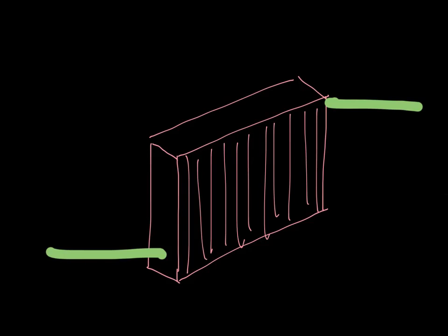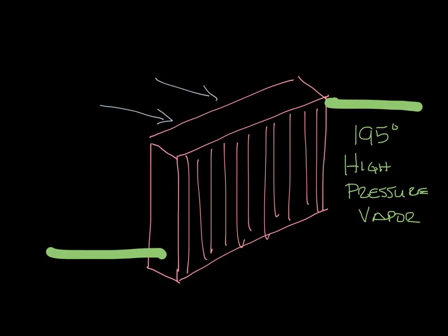So coming into the condenser, you have 195 degree high pressure refrigerant vapor. Air passes through the fins of the condenser and cools the 195 degree vapor down, which causes it to condense back into a liquid.